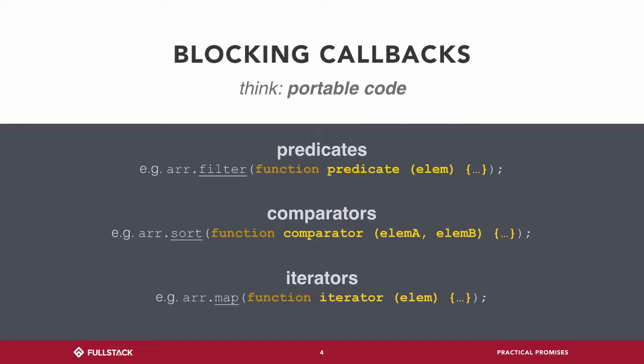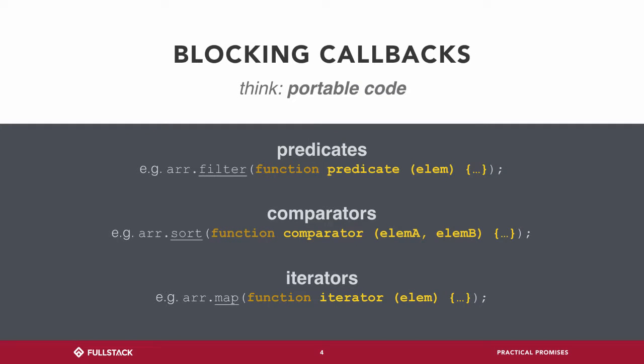You're going to recognize these right off the bat. When we look at any of our reduce functions, any of our filter functions, all those have callbacks, but they're not asynchronous. So if you were to look at someone's code and saw it had a callback, you really don't know whether or not that's going to be asynchronous unless you know more about the code. These are iterator methods we're using.